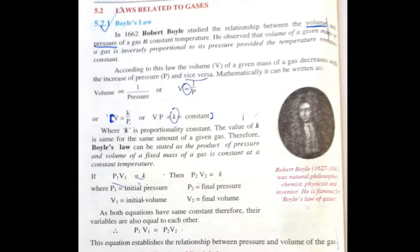And there is an inverse relation between volume and pressure. So first of all, we will describe the definition. Boyle's law is defined as the product of pressure and volume of a given mass of a gas is constant at a constant temperature.